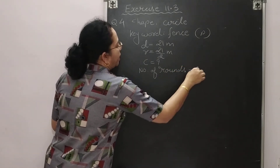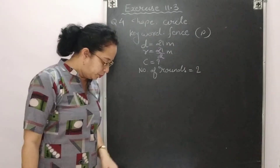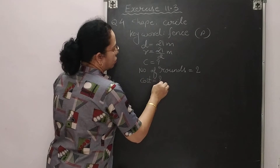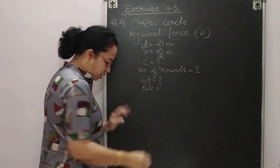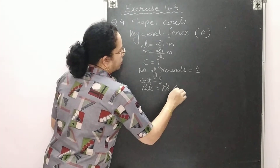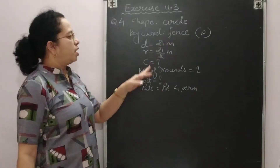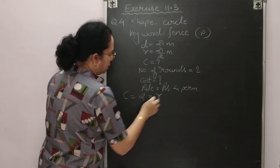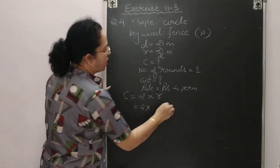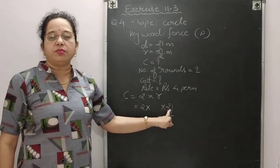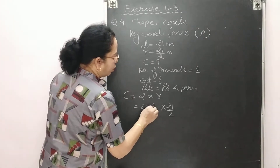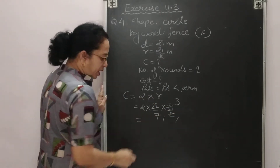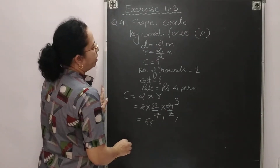We will find circumference and multiply by the number of rounds (2). The rate for cost is Rs. 4 per meter. Formula: C = 2πr. Write 2, leave place for pi, r = 21/2. Since 21 is divisible by 7, pi = 22/7. Cancel 7: 3 × 22 = 66 meter. So circumference = 66 meter.